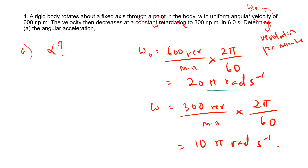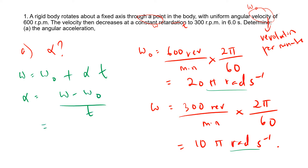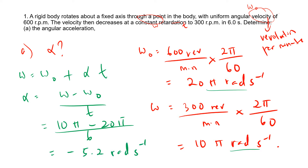Now that we have the correct SI units, we apply the formula: omega equals omega naught plus alpha times t. Making alpha the subject: alpha equals (omega minus omega naught) divided by t. So alpha equals (10π minus 20π) divided by 60, which gives us negative 5.2 rad s⁻². It is negative because this is a deceleration — angular retardation.